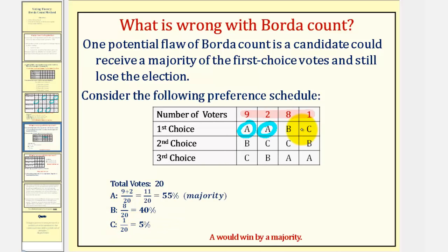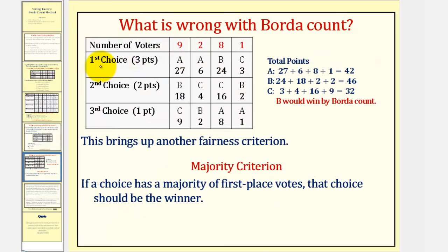So A would win by majority. But now let's find the winner of this election using the Borda Count method. Since there are three candidates, first choice votes are worth three points, second choice votes are worth two points, and third choice votes are worth one point. Looking at the first column, nine voters voted A first, so A receives nine times three, or twenty-seven points. In the next column, two voters voted A first, so A receives another two times three, or six points. B is voted first by eight voters, so B receives eight times three, or twenty-four points. Every vote in the second row is worth two points, so B receives eighteen points there, since nine times two equals eighteen.